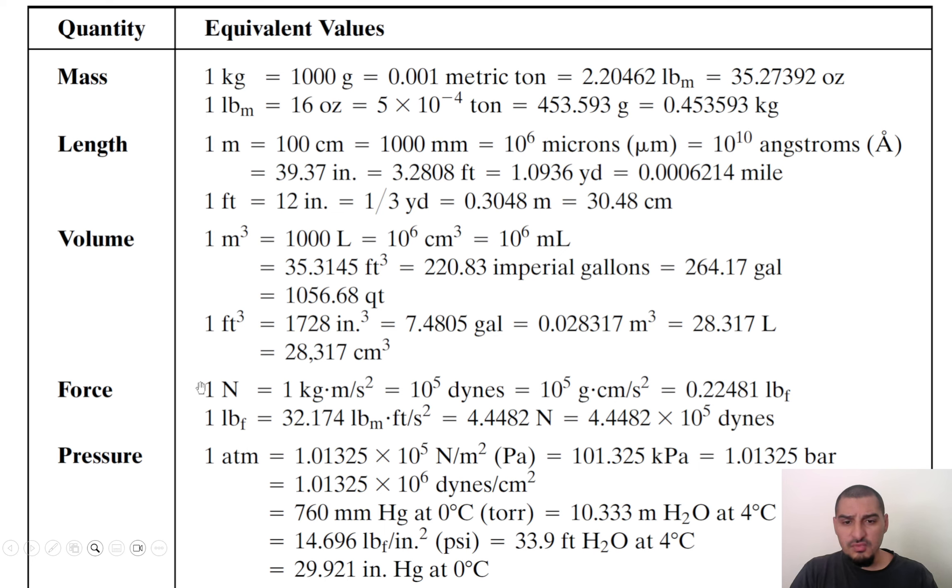We have here the force. I'm going to talk about the force in details in the next slide, but just I'll mention some things here. That we have here, Newton is kilogram meter per second square, it's well known. And then we have a dyne. Dyne is the CGS unit of force. So the dyne is gram centimeter per second square. So it's exactly kilogram meter per second square, but in CGS units.